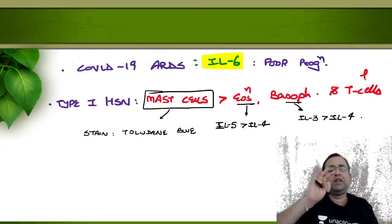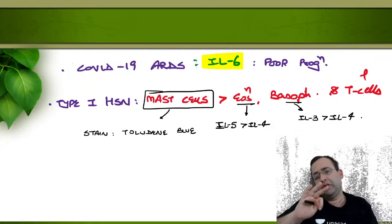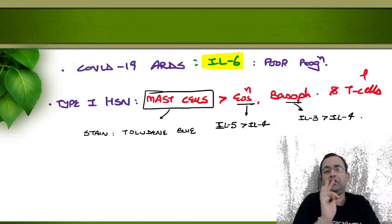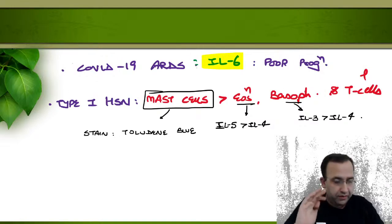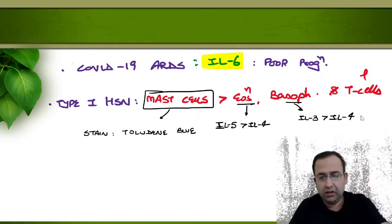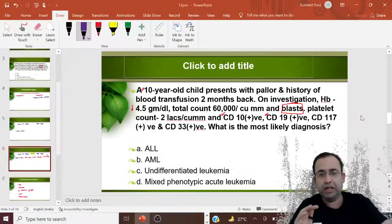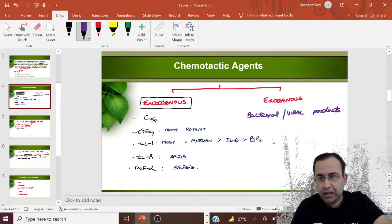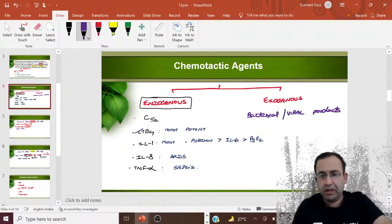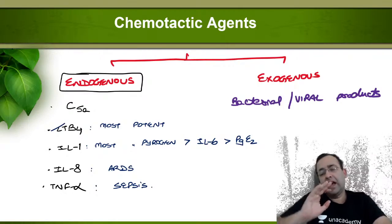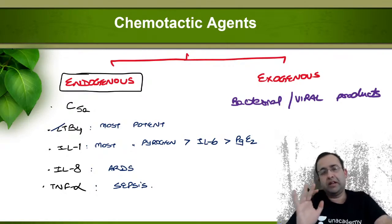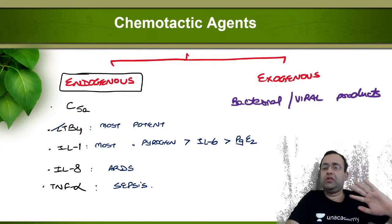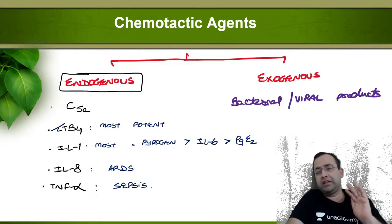For basophils, the most potent activator is interleukin-3, followed by interleukin-4. Remember: basophil is the second alphabet B, so IL-3 (not IL-5) is the activator. These are the main points with respect to chemotactic agents and associated cytokines.